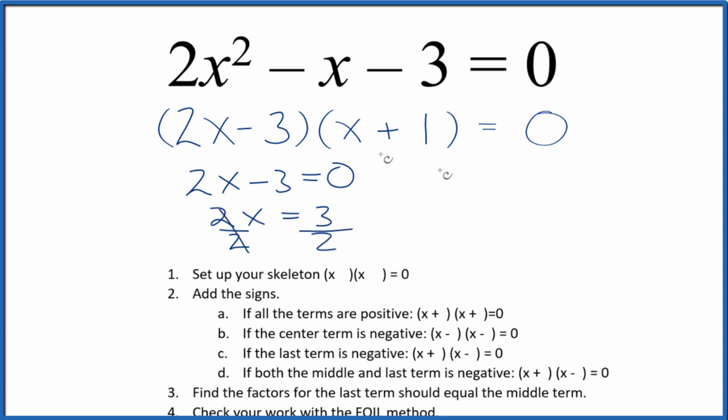Likewise, we could say x + 1 = 0, so x = -1. If you put negative 1 in for x and do the math, all of this will equal 0. So these are the roots for 2x² - x - 3. If you use the quadratic equation, you get the same answer.